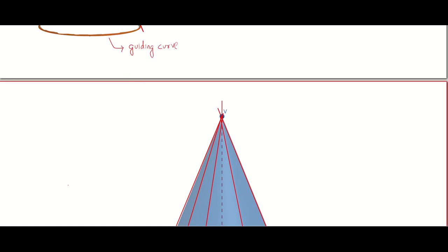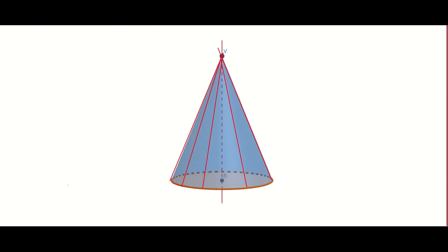Here the generating line will pass through the vertex — it passes through the vertex and it will touch the guiding curve. If you collect all the generating lines that pass through that vertex and touch the guiding curve, then we end up with the cone. There are infinite generating lines and if you look at them together you see the cone.